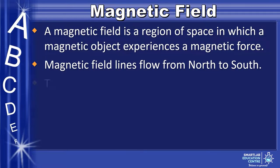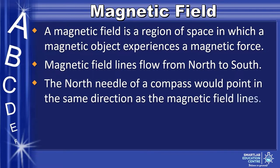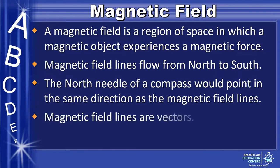In most compasses, the north needle of the compass points in the same direction as the magnetic field lines. Magnetic field lines have a direction, suggesting that they are vectors.